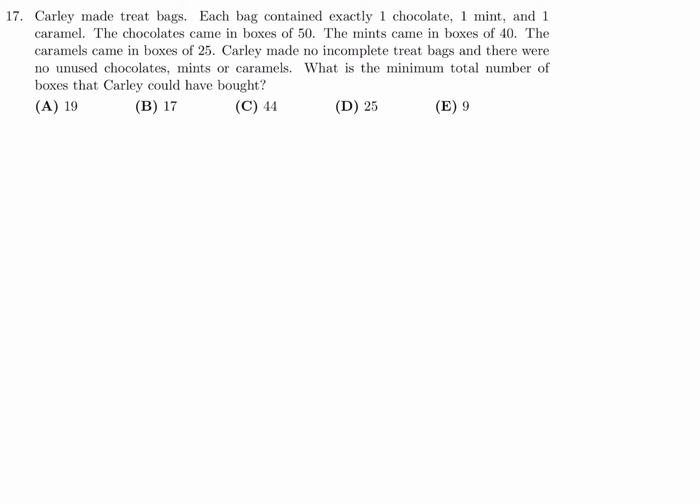Carly made treat bags. Each bag contained exactly one chocolate, one mint, and one caramel. The chocolates came in boxes of 50, the mints came in boxes of 40, the caramels came in boxes of 25. Carly made no incomplete treat bags, and there were no unused chocolates, mints, or caramels. What is the minimum total number of boxes that Carly could have bought? This question involves getting the least common multiple of 50, 40, and 25. And for least common multiple, you think max. And let me explain what I mean by that.